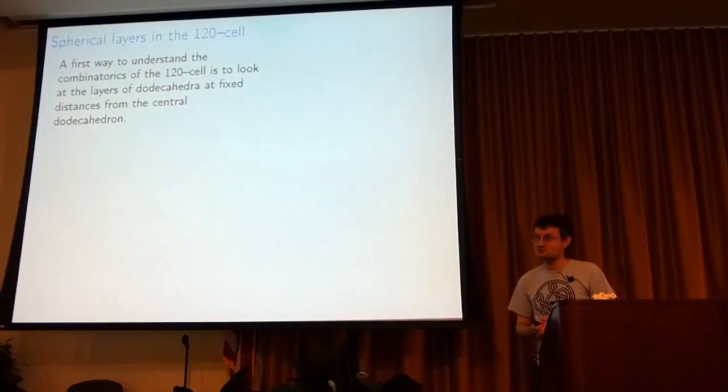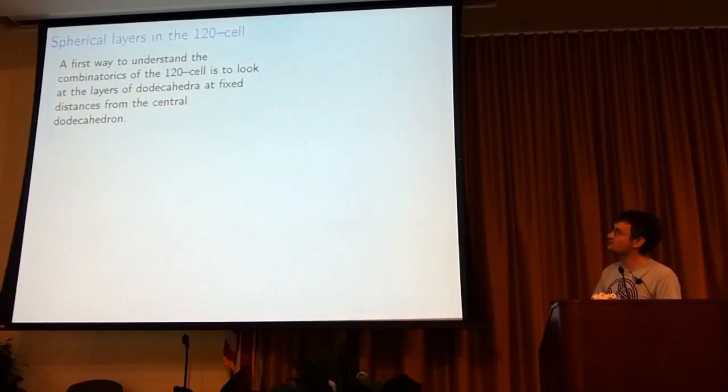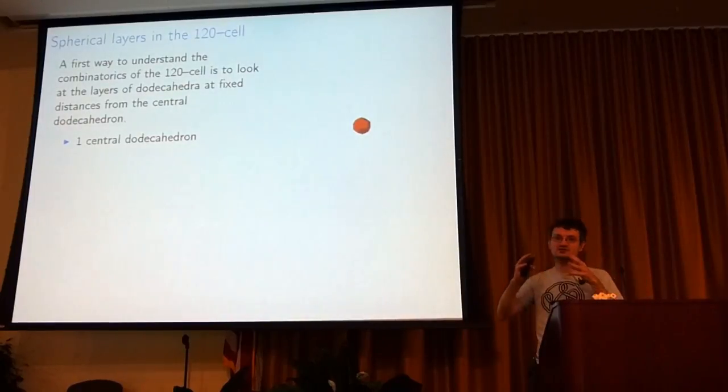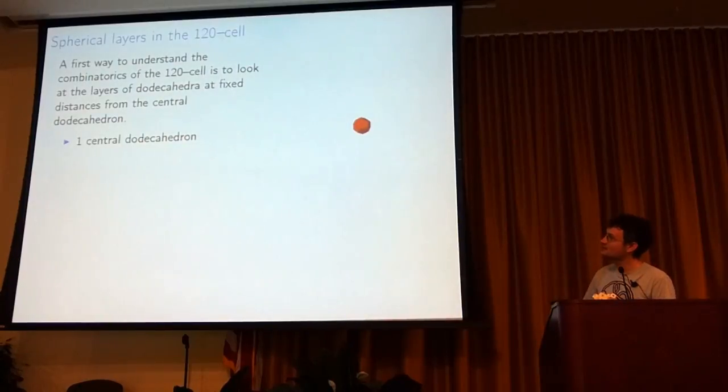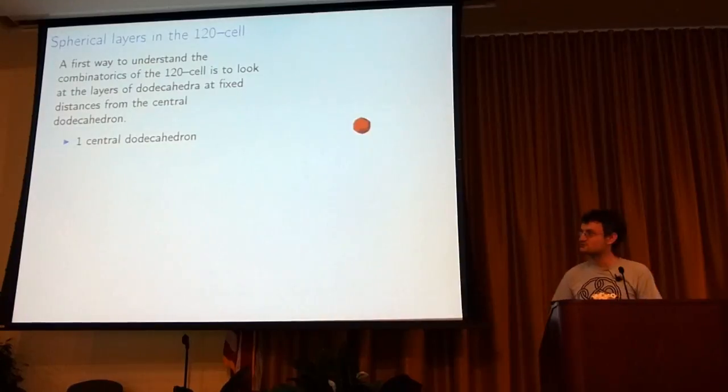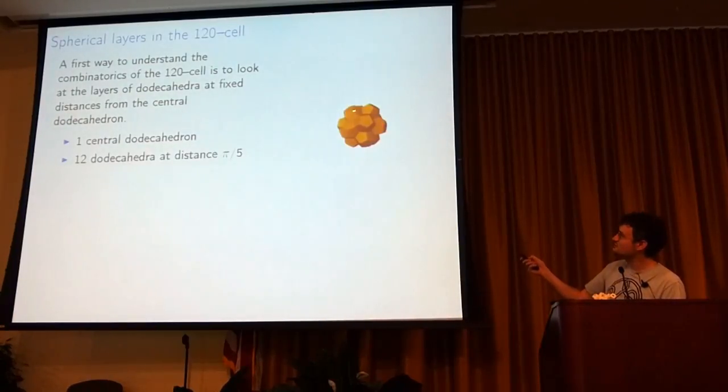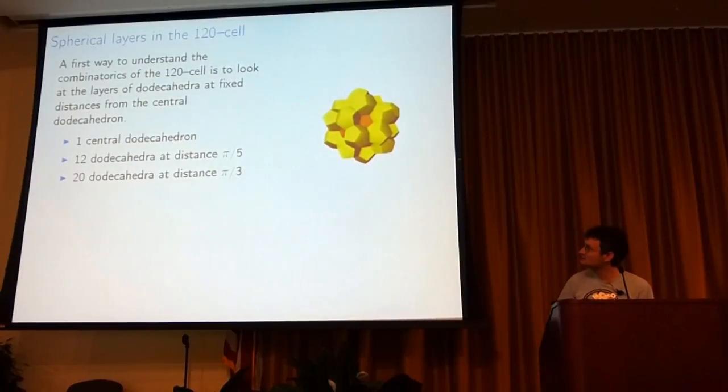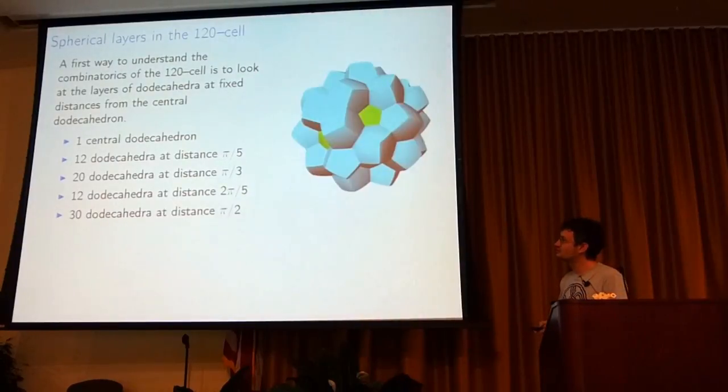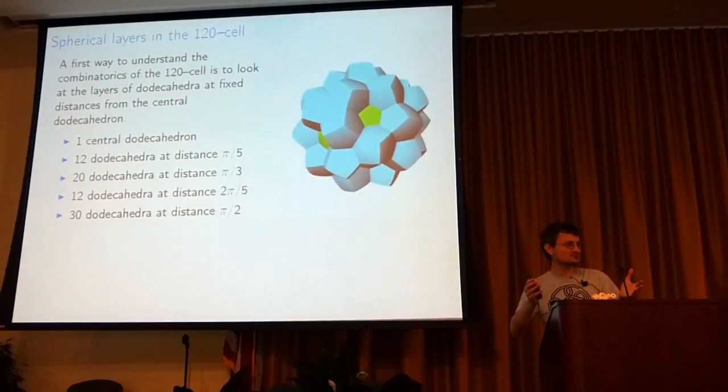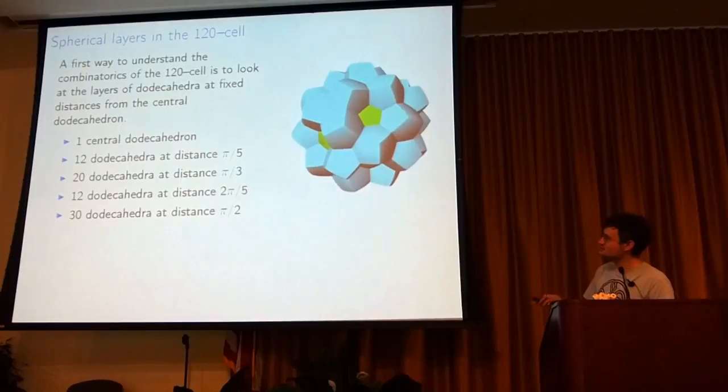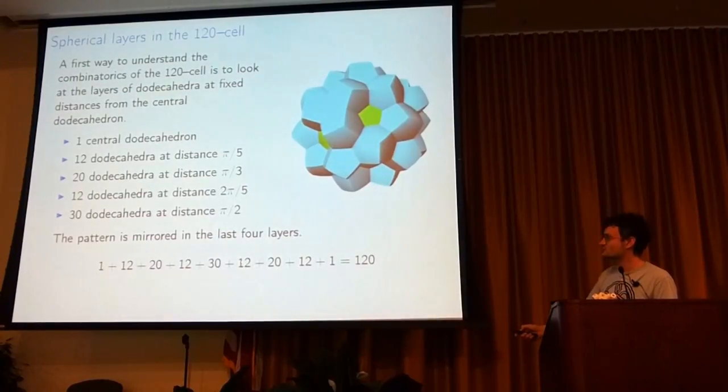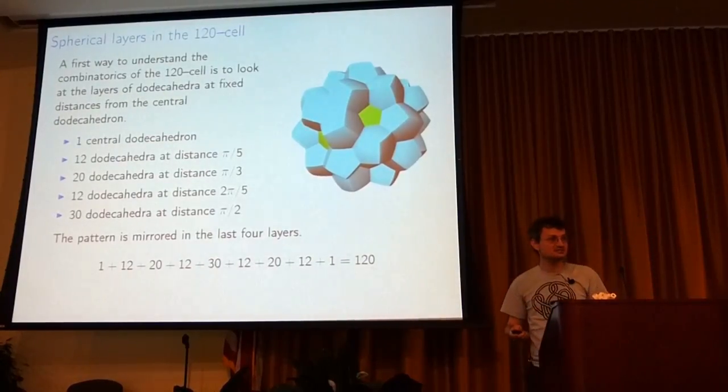How do we understand what is going on with the 120-cell? Here's one way to look at it. Let's start with one dodecahedron at the south pole of the 3-sphere. We're going to look at the layers of dodecahedra moving upwards from this first dodecahedron. We can measure distances in the 3-sphere by an angle, just as you would on the 2-sphere. So next to this central dodecahedron, there are 12 dodecahedra at distance π/5. Then the next layer out, there are 20 dodecahedra at distance π/3. Another 12 at distance 2π/5, and 30 at distance π/2. These are on the equator. And it turns out the last four layers, you're building the other half of the 120-cell. So you get another layer of 12, another layer of 20, 12 and 1, and that's out to 120.